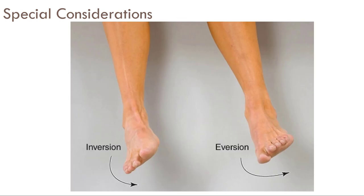Foot inversion and eversion occur at the subtalar joint, below the ankle. Inversion is the bottom of the foot facing inward, and eversion is the bottom of the foot facing outward. Both are shown as examples using the right leg.